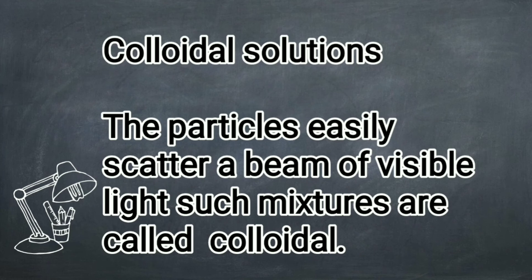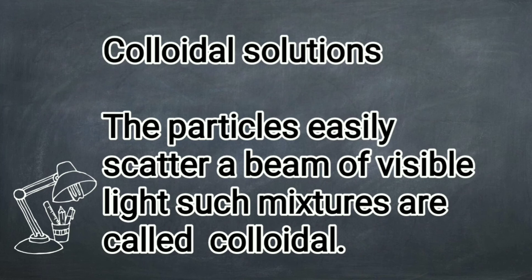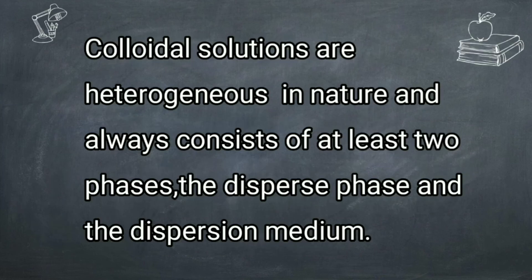In colloidal solutions, there always exist at least two phases: the disperse phase and the dispersion medium. The disperse phase is the substance present in the smaller portion — like the solute in a solution. The particles in colloidal solutions are of colloidal size, ranging from 1 nanometer to 200 nanometers. The dispersion medium is the medium in which the colloidal particles are dispersed. These two phases can be in the form of solids, liquids, or gases.